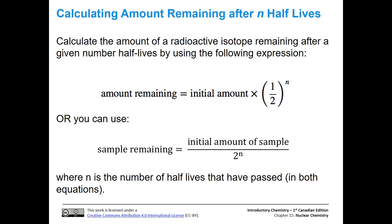Let's look at an example for how to calculate the amount remaining after a certain number of half-lives. We can actually do this a couple of different ways. We can use this expression: the amount remaining equals the initial amount times one-half to the number of half-life power. So if we had one half-life, that would be one. If we had three half-lives, that would be three. You could also use this equation, where you have the amount remaining equals the initial amount divided by two to the n power. Again, n is the number of half-lives that have passed, and that's the same for both of those equations.